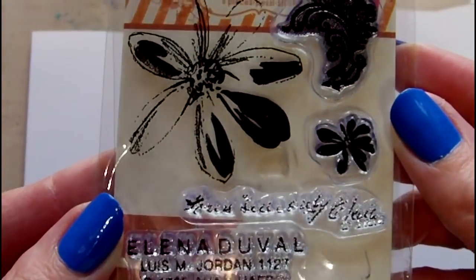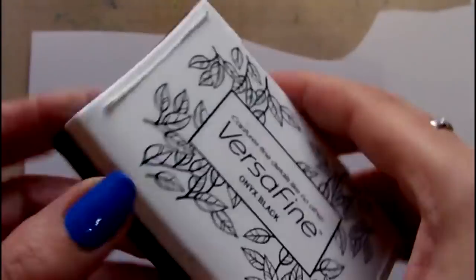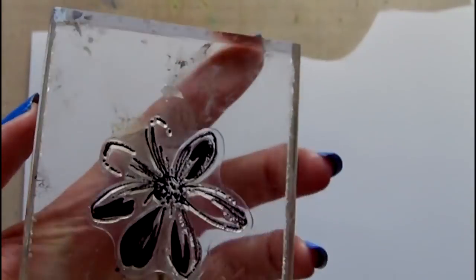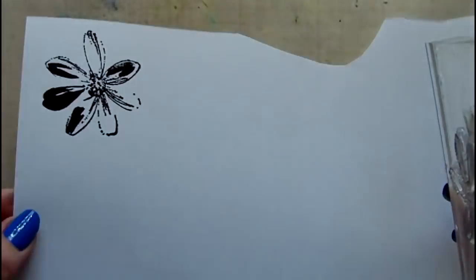Next I'm taking another stamp by Prima. This time I'm selecting the larger flower stamp from this set and stamping it onto lightweight cardstock using VersaFine ink, then letting it dry and coloring it with distress ink in rusty hinge.